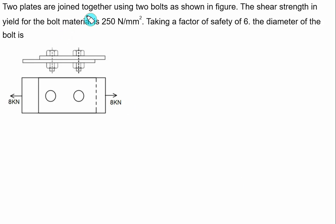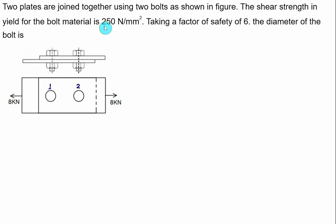The two plates are joined together using two bolts, bolt number one and bolt number two. The shear yield strength for the material, SYS, is given as 250 MPa, taking the factor of safety as 6. The diameter of the bolt we have to find out.